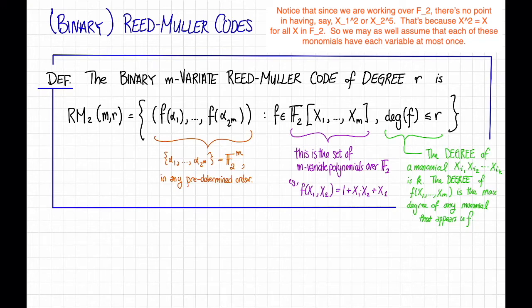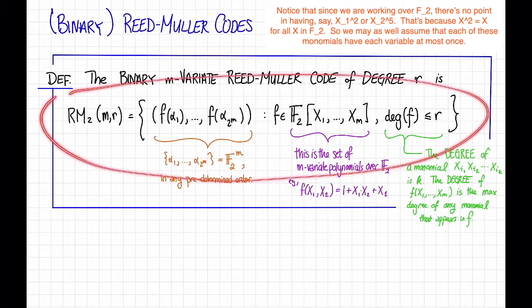So this looks an awful lot like a Reed-Solomon code, except that we're looking at multivariate polynomials.